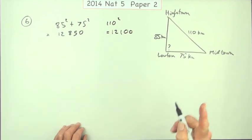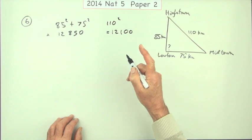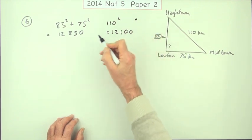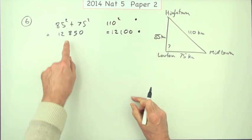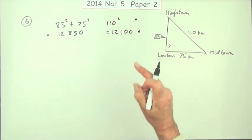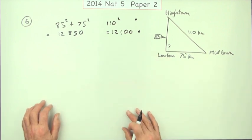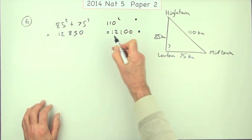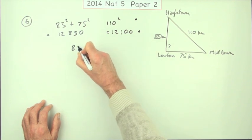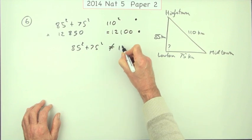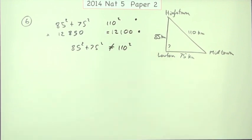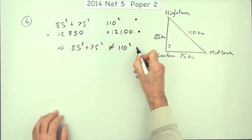As far as the four marks are concerned, the first mark would be for doing Pythagoras things like finding the squares of appropriate sides. The second mark would be for getting the two answers. And the third mark will be for making a comparison. Well, quite clearly, that's not equal to that. So now you can say 85 squared plus 75 squared is not equal to 110 squared. That'd be the third mark.